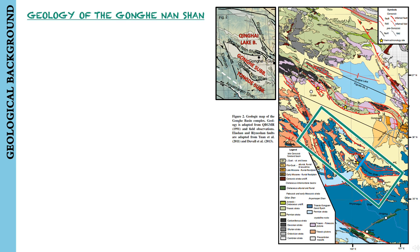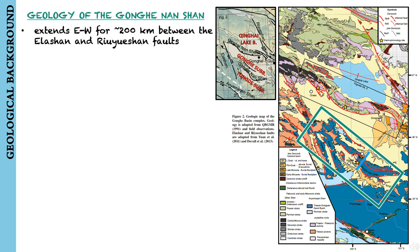The Gonghe-Nanshan also extends east-west for about 200 km along strike between the Elashan and the Riyuexan faults, and separates the Gonghe Basin into the northern and southern sub-basins termed in this paper the Gonghe sub-basin and the Tongde sub-basin.